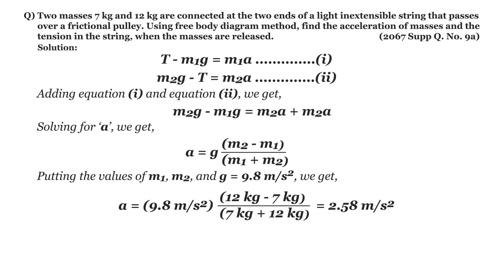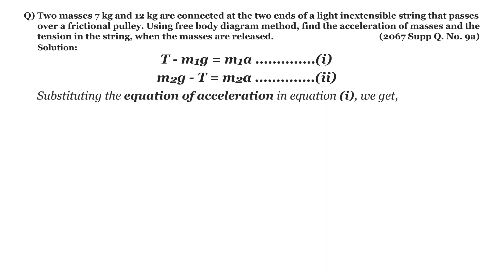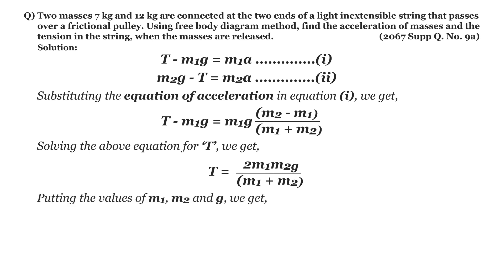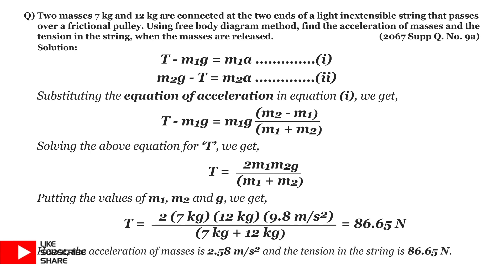Now to find the tension, we substitute the expression for acceleration into Equation 1. We get: T − m1g = m1g(m2 − m1) / (m1 + m2). Solving for T gives: T = 2·m1·m2·g / (m1 + m2). Substituting the values of m1, m2, and g, we get T = 86.65 N. Hence, the acceleration of the masses is 2.58 m/s² and the tension in the string is 86.65 N.